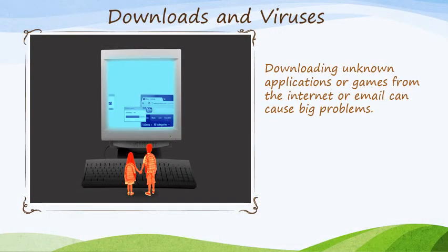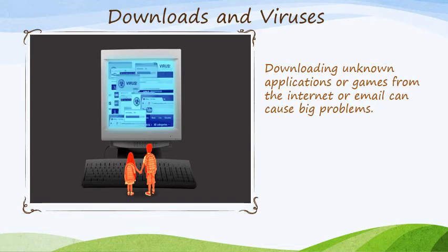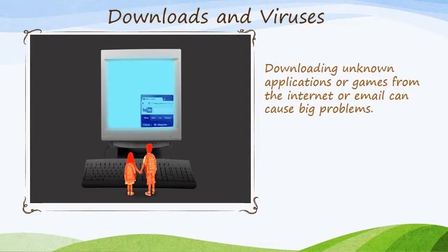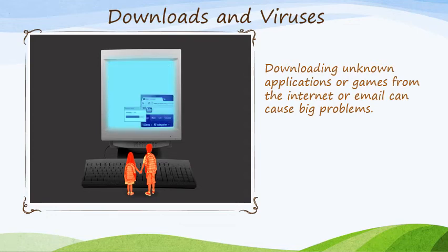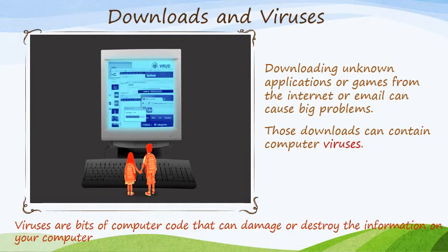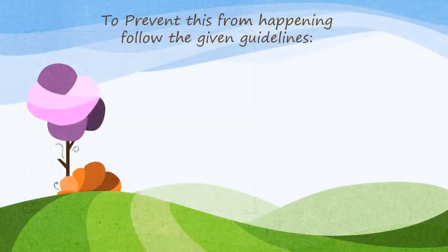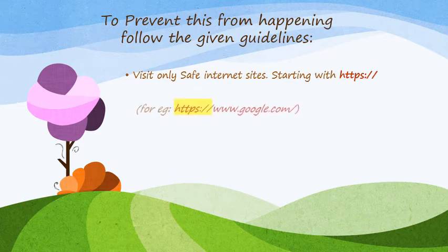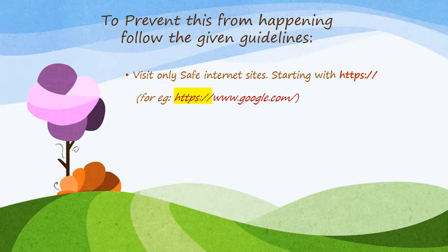Moving on from passwords, we come to downloads. We need to download other people's files also. Downloading means getting information from the net onto your computer. This information could be in the form of a game, a file, or a video. But if these applications are downloaded from unknown places they can cause big problems — like they can have viruses. Viruses are computer codes that damage or destroy the information on our computer. To prevent this, visit only safe sites — those starting with HTTPS, where the S stands for security. For example, google.com starts with HTTPS, so it is a safe site.